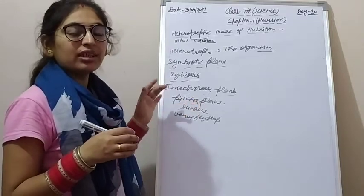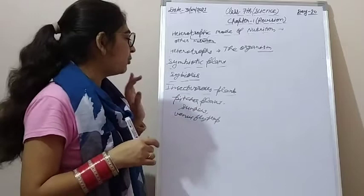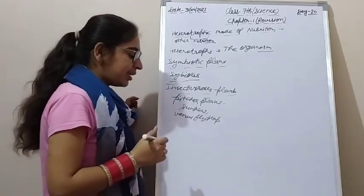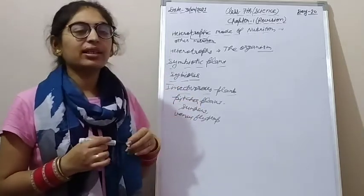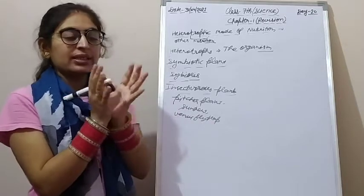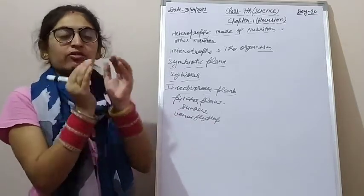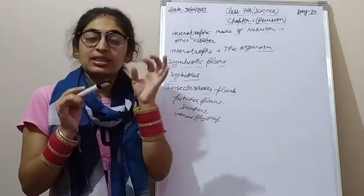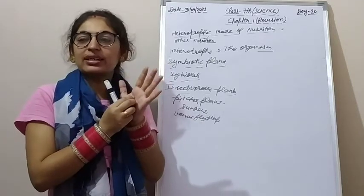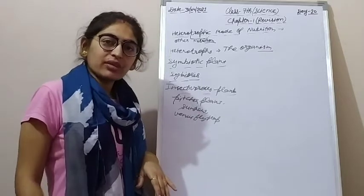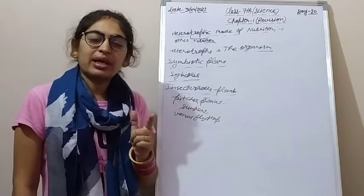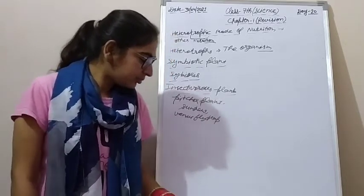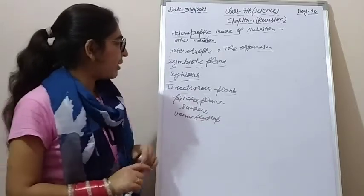In insectivorous plants, chlorophyll is present and photosynthesis occurs, but it is not sufficient to meet their full food requirements. In the Venus flytrap, the leaves open and when an insect touches them, they close and then digest the insect. In sundew, sticky hairs are present which trap the insect and expose it to digestion.